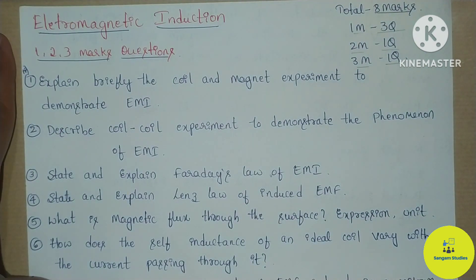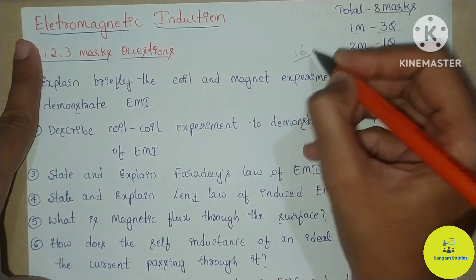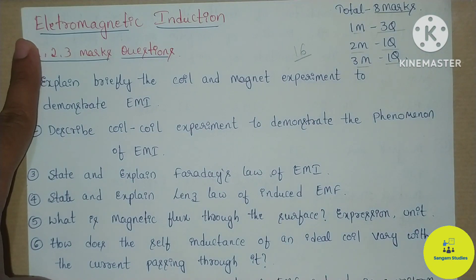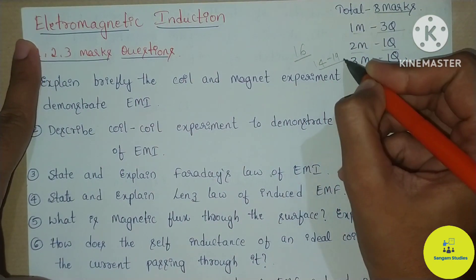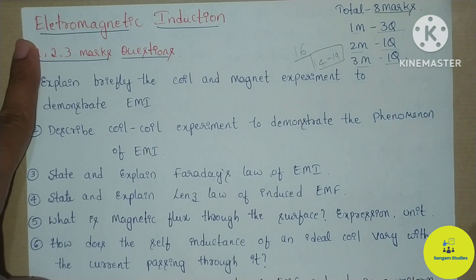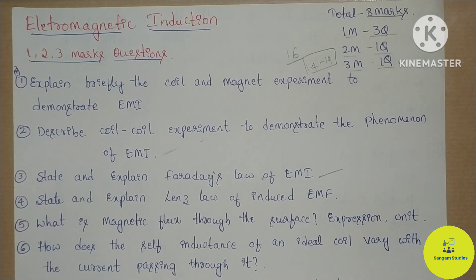From the mid-term examination point of view, it is 8 marks, and from the final exam it is 16 marks, with 13 to 14 marks being the same. There are also 1-mark, 2-mark, and 3-mark questions. Around 12 to 13 questions are important, so you will have a good chance to score in this chapter.